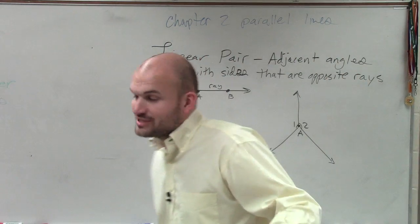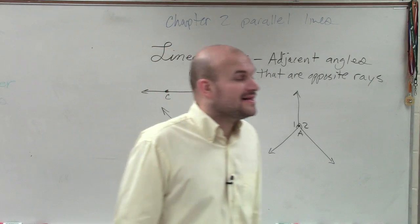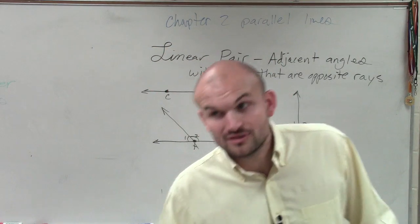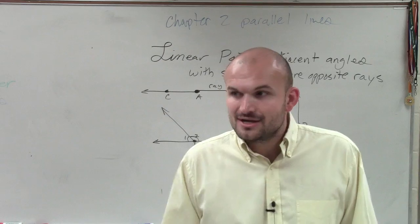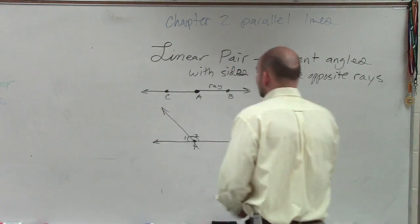So all I'm asking you to do is when I say it's a linear pair, that means I have adjacent angles that are on a line. So let's go and look at our example and our non-example.